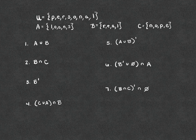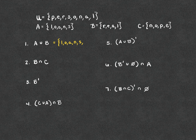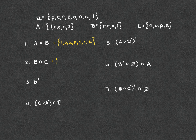For number one, A union B means combining everything in A and everything in B. Starting with all elements of set A — the letters in 'loans' — then adding from set B any letters not already included: R and E. We already have A and L from 'loans.' For number two, B intersect C is what set B and set C have in common. The only element in both set B and set C is the letter E.